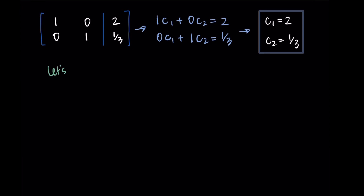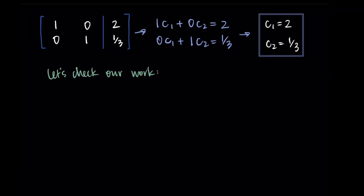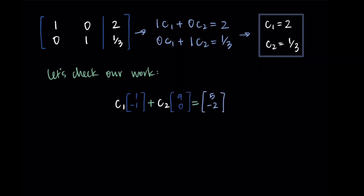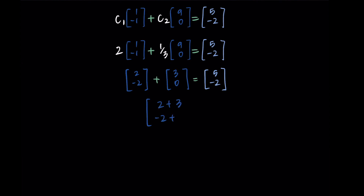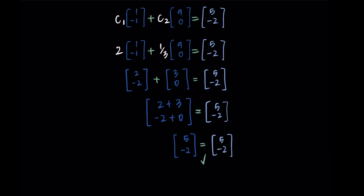Let's check our work. We substitute c1 = 2 and c2 = 1/3 back into the vector equation. Distributing 2 gives [2, -2], and distributing 1/3 gives [3, 0]. Adding corresponding elements: first row is 2 + 3 = 5, second row is -2 + 0 = -2. We get [5, -2], which equals b. These weights work — they create the linear combination we were looking for.